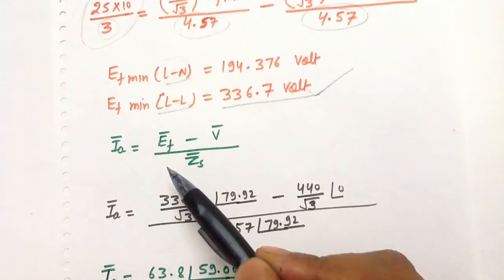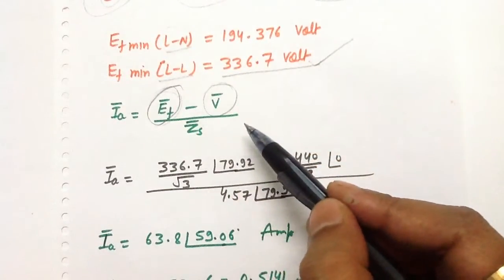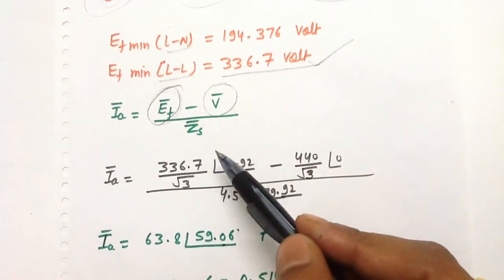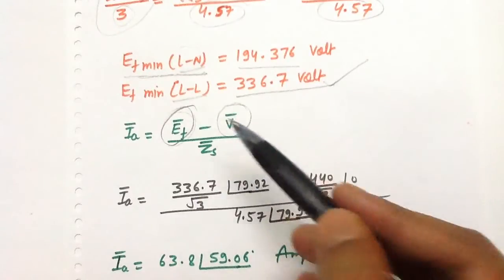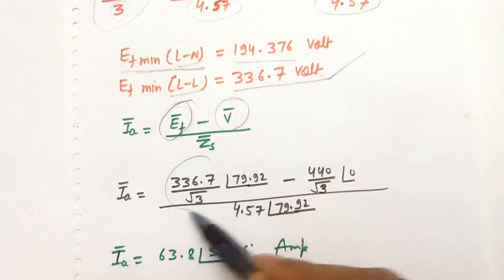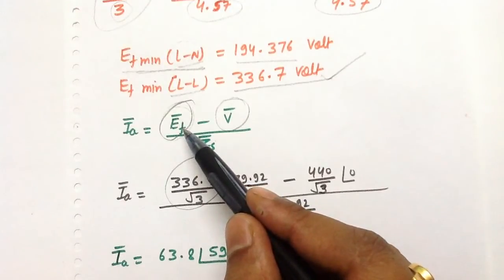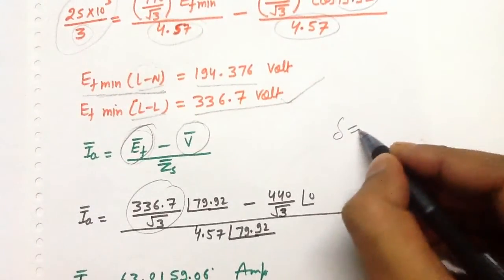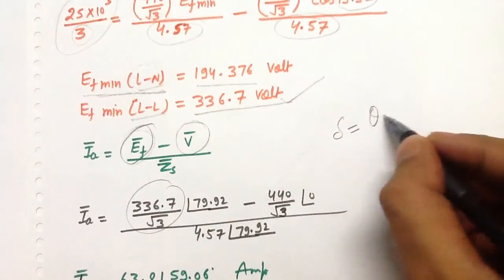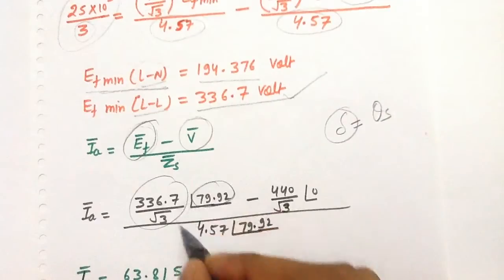Now we calculate the value of Ia. The value of Ia can be calculated as Ia = (Ef − V) / Zs. Here Ef is the line-to-neutral voltage and V is also the line-to-neutral terminal voltage. The minimum excitation voltage is 194.376 V, or equivalently 336.7 / √3. This excitation leads the terminal voltage by an angle of 79.92°, because Ef is minimum when δ = θs = 79.92°.